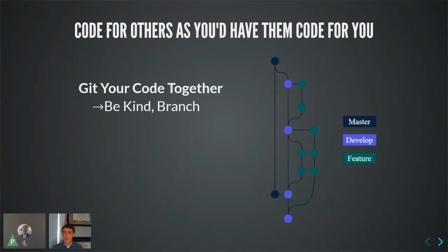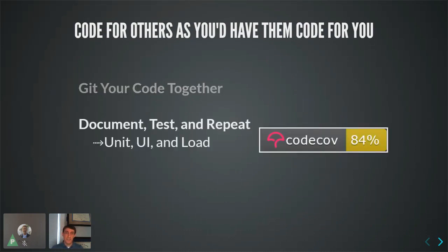Part of that is having a git flow. You might use GitHub, but having some kind of git flow — for us, a master branch that gets deployed and a development branch for testing — is essential. There are others out there; you've got to figure out what works for you. Also: document. With Roxygen it's really easy — you add comments by your functions and it generates the markdown right there.